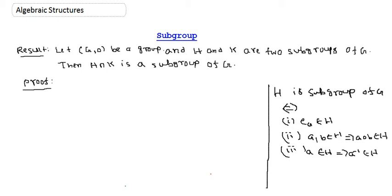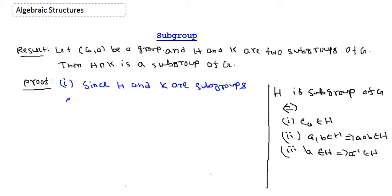We will check that the elements of H intersection K satisfy these properties. First: since H and K are subgroups, they each contain the identity element. So the identity element e_G belongs to both H and K, which clearly implies that e_G belongs to H intersection K. The first property is satisfied.